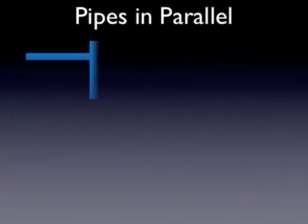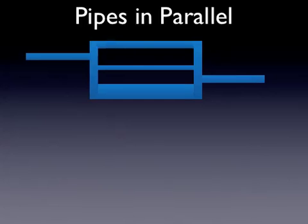For pipes in parallel, it's the same idea, but it's kind of turned on its head. So now we have flow going into a junction, splitting up amongst those three pipes, and then going out into another junction.